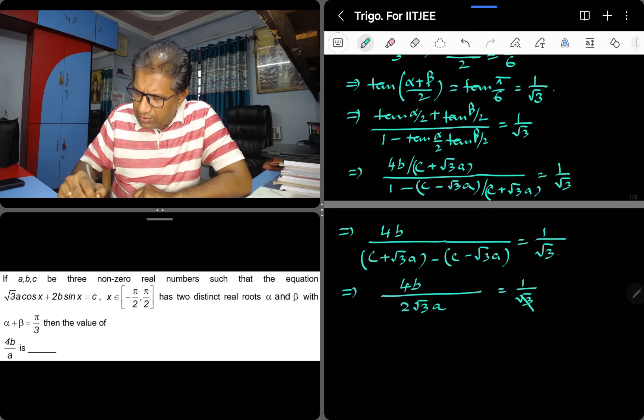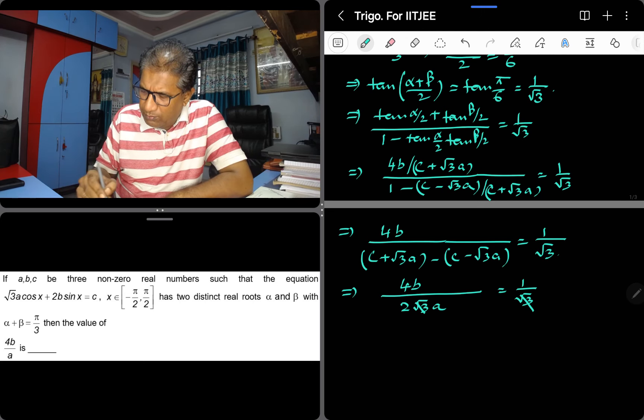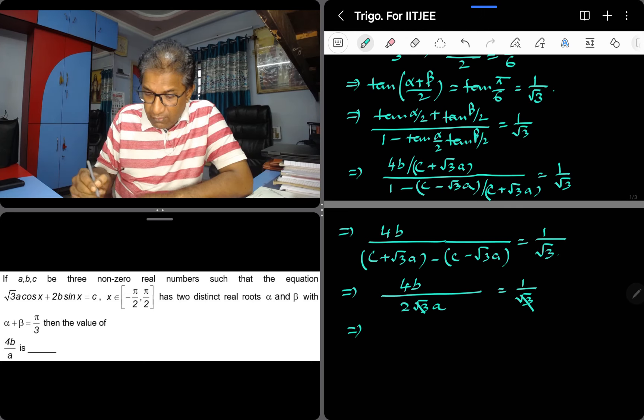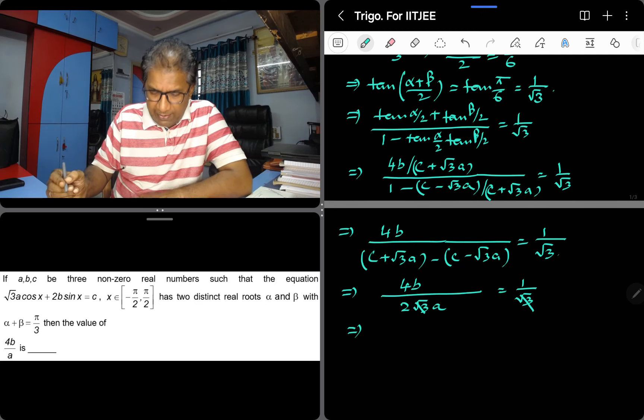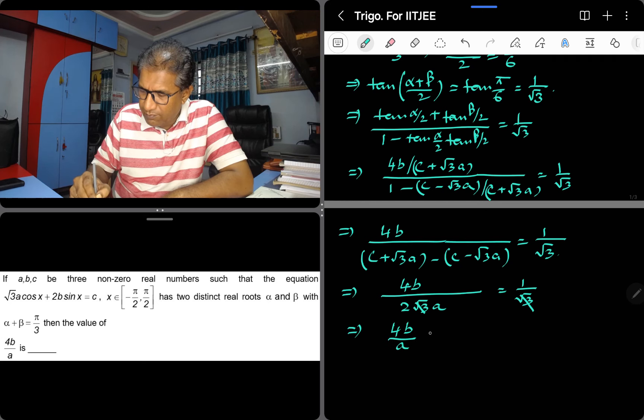Root 3 and root 3 on both sides cancel out. So I need the value of 4b over a. 4b over a can be written as... is equals to 2.